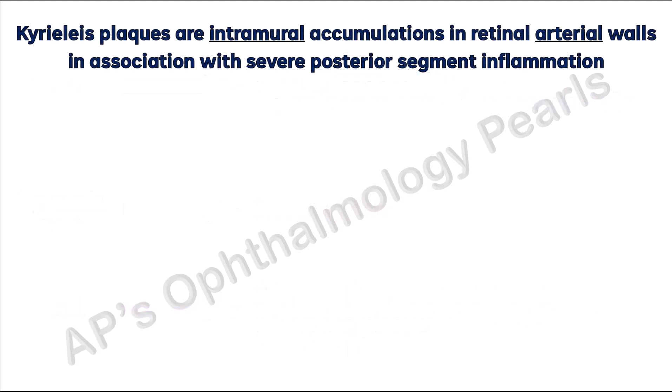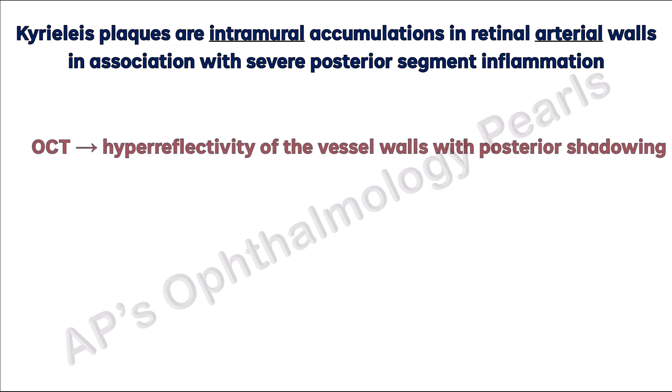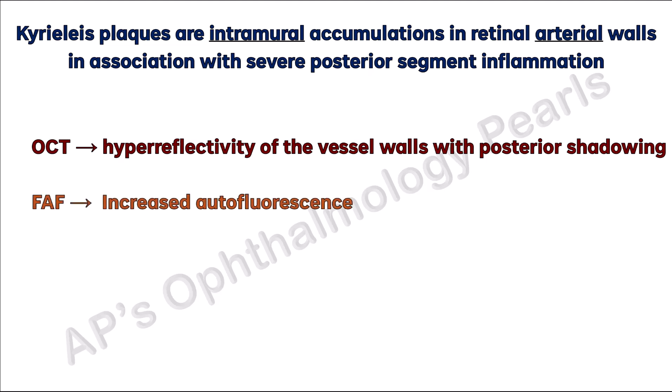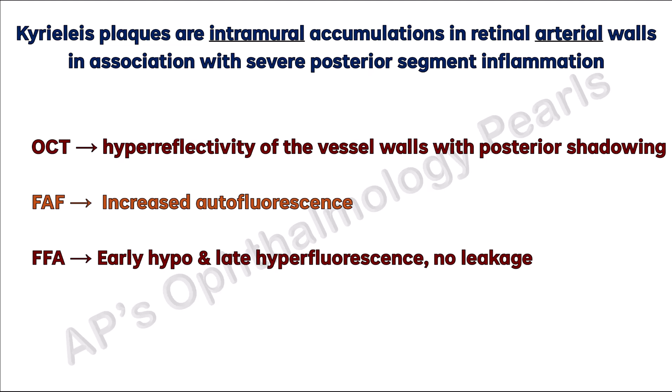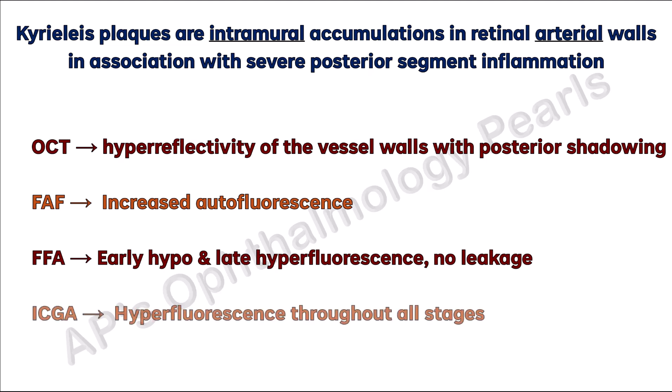In summary, Chirilis plaques are intramural accumulations in retinal arterial walls in association with severe posterior segment inflammation. The plaques are located within the vessel walls and occur possibly due to endothelial inflammation. OCT shows hyperreflectivity of the vessel walls with posterior shadowing. FAF shows increased autofluorescence. Fundus fluorescein angiography shows early hypo- and late hyperfluorescence with no leakage. ICGA shows hyperfluorescence through all stages.